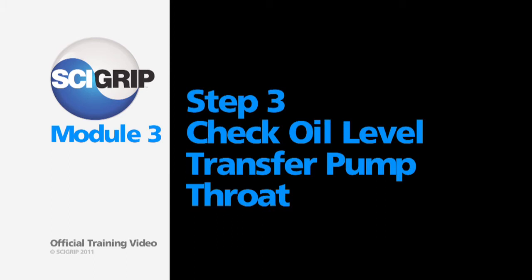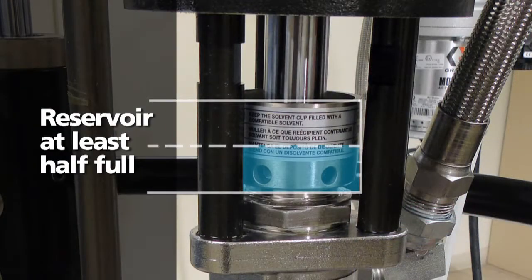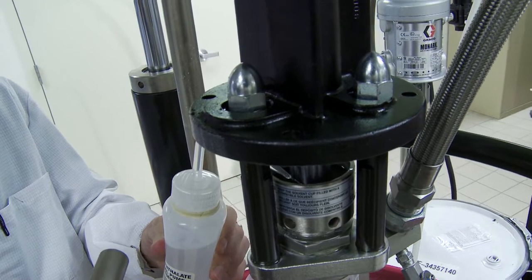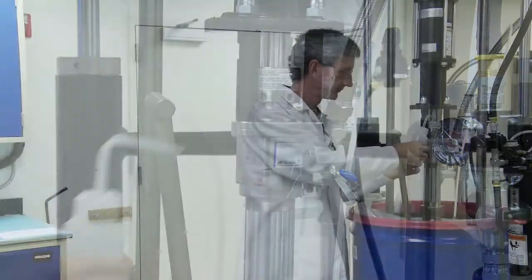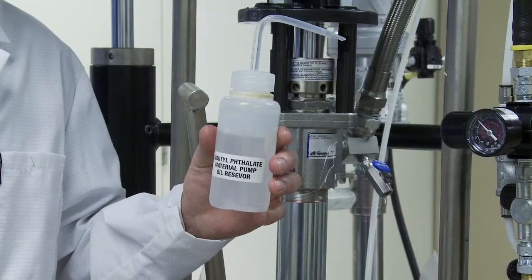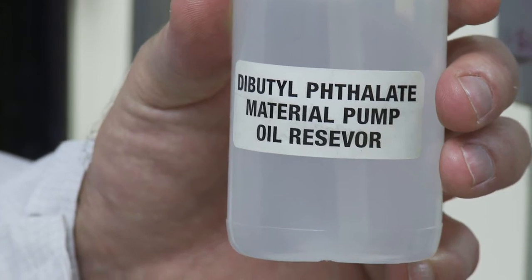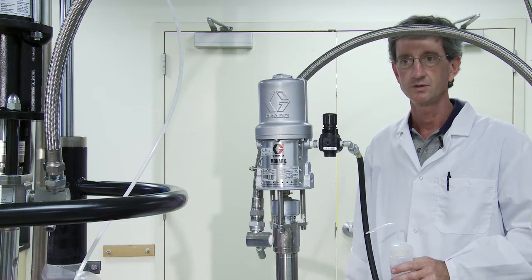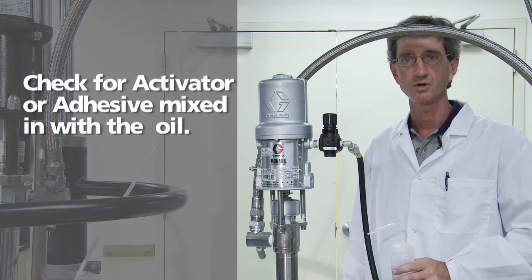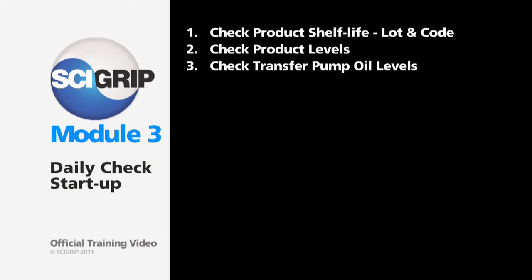Step three, check the oil level on the transfer pump throat. Simply look in the reservoir and ensure that it's at least half full. If it's low, firmly squeeze the bottle provided until it's full at least halfway. The clear light oil provided is the throat oil which goes in the reservoir using the squeeze bottle that is shipped with the pump. The oil reservoir on this activator pump is the same as the one on the adhesive pump. Simply make sure both are half full, and while observing the oil level, ensure there's no adhesive or activator mixed in with the oil. Adhesive or activator in the reservoir means the seals are worn and the pumps will need to be rebuilt.